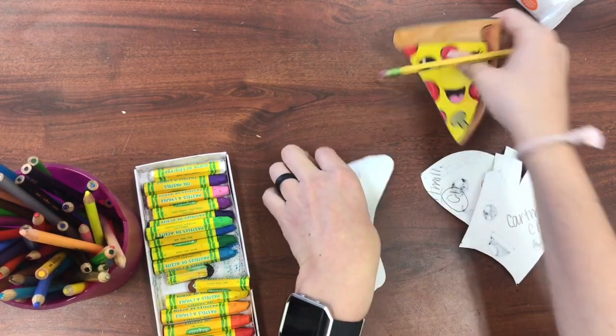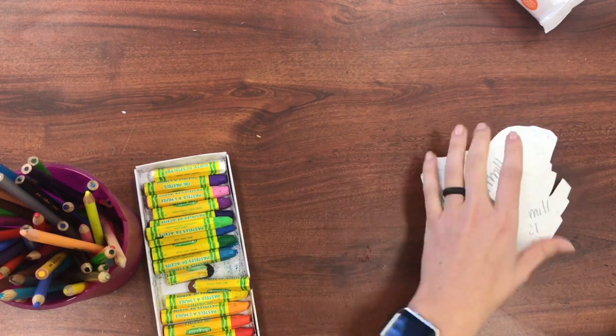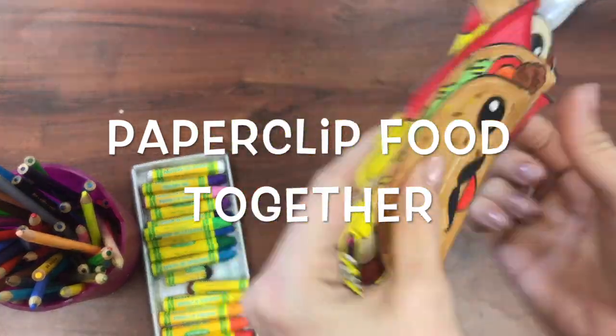When you're finished writing your name on the back of each character, you're going to take a paper clip and paper clip them together so that they all stay together for when we finish this project next week.